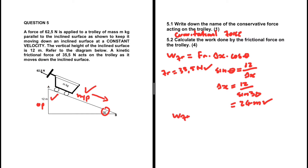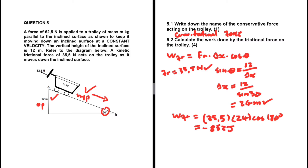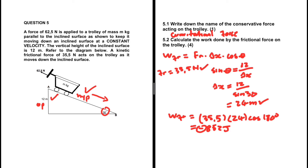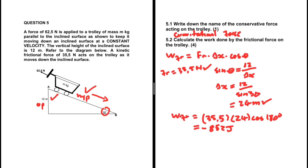The work done by the frictional force = 35.5 × 24 × cos(180°) = 35.5 × 24 × (−1) = −852 joules. That is the work done by the frictional force. The negative sign doesn't indicate direction — energy is a scalar, not a vector. That minus sign shows there is a loss in energy on the object.